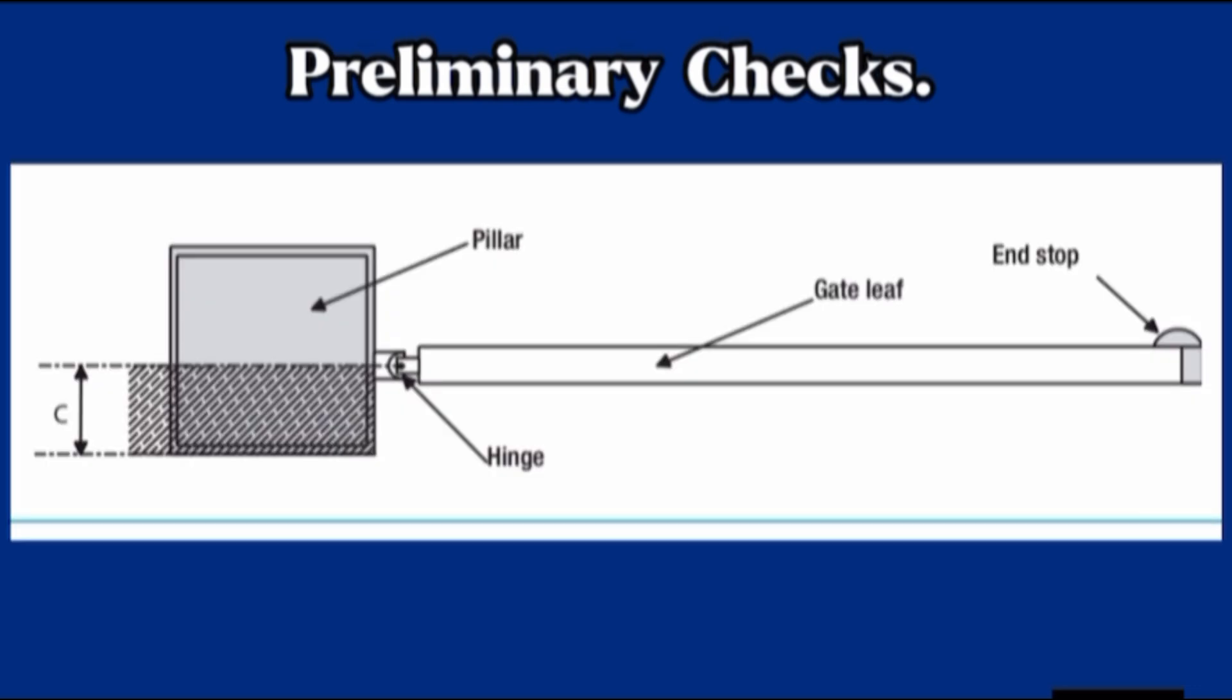Preliminary Checks. Before installing, do the following. Make sure the structure of the gate is sturdy, the hinges work, and that there is no friction between moving parts and non-moving parts.